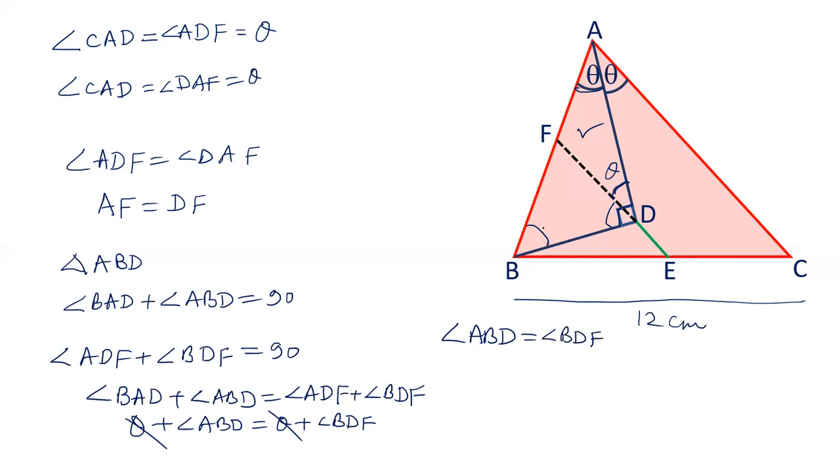That is, angle ABD and this angle are equal. Let's name this as alpha. So if these two angles are equal, this is also an isosceles triangle. And sides opposite to these equal angles are equal. So DF and BF are equal.